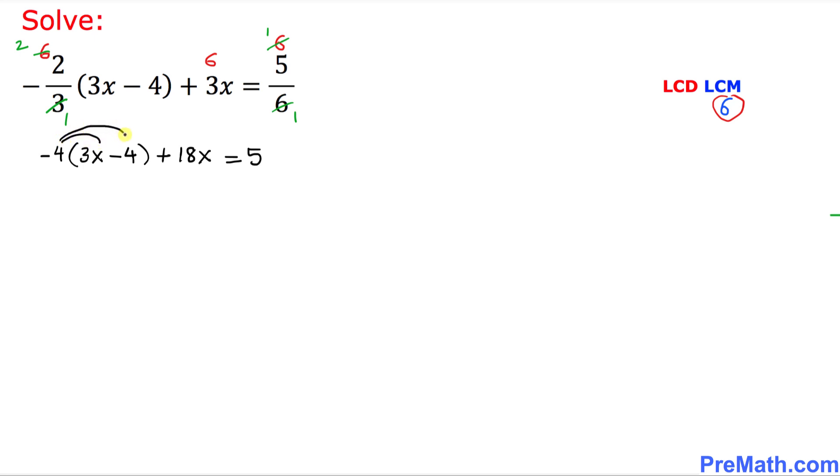We no longer have fractions. The next step is we are going to distribute this negative 4 multiplied with whatever is in this parentheses. So that's going to give us negative 12x plus 16 and then plus 18x equals to positive 5.